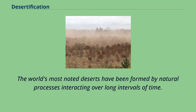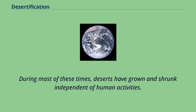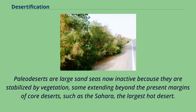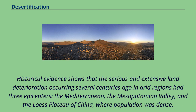The world's most noted deserts have been formed by natural processes interacting over long intervals of time. During most of these times, deserts have grown and shrunk independent of human activities. Paleo deserts are large sand seas now inactive because they are stabilized by vegetation, some extending beyond the present margins of core deserts, such as the Sahara, the largest hot desert. Historical evidence shows that serious and extensive land deterioration occurring several centuries ago in arid regions had three epicenters — the Mediterranean, the Mesopotamian Valley, and the lowest plateau of China, where population was dense.